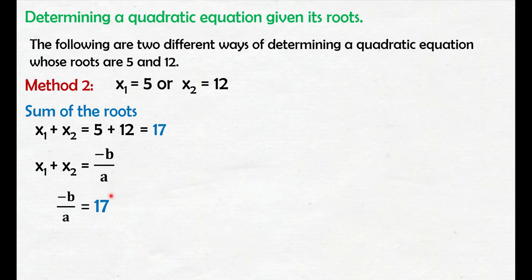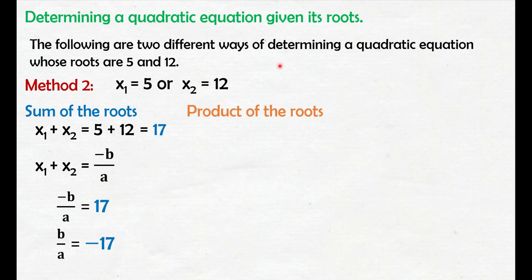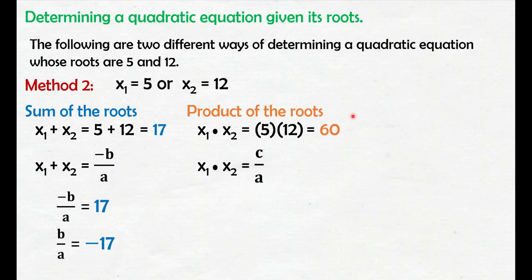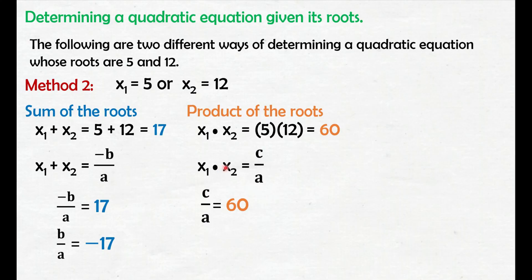By transitive property, negative b over a equals 17. For the product of the roots, multiply the two roots: 5 times 12 is 60. From the formula, x sub 1 times x sub 2 equals c over a. Since x sub 1 times x sub 2 also equals 60, by transitive property, c over a equals 60.